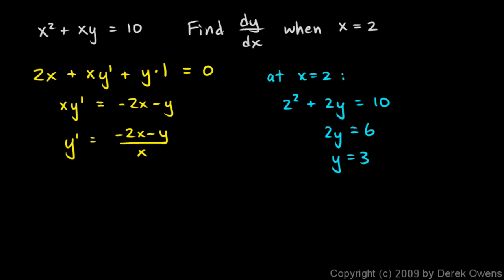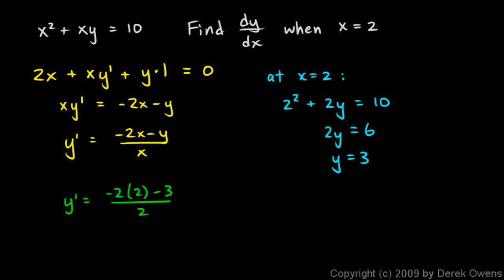Then the final answer: y prime equals negative 2 times 2 minus 3, over 2. That's negative 4 minus 3, which is negative 7, over 2. So y prime equals negative 7 over 2.